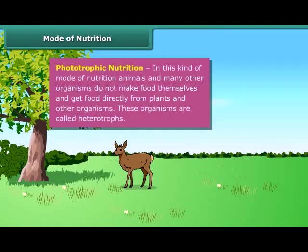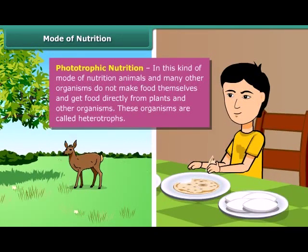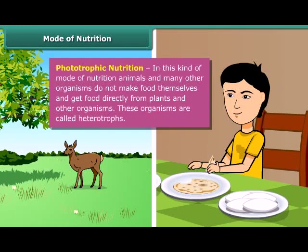The mode of nutrition in which animals and many other organisms take in ready-made food prepared by plants is called heterotrophic nutrition, and these organisms are called heterotrophs. Humans, lions, tigers, etc. are examples of heterotrophs.